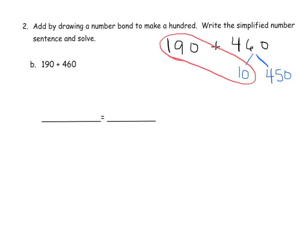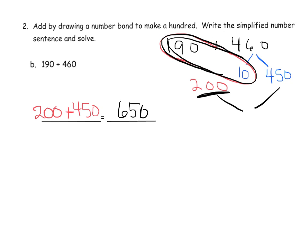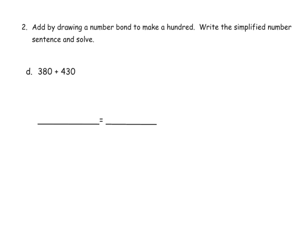I can see that I can add 190 plus 10. And that gives me 200. So now our new simplified number sentence can be 200 plus 450. And then when we add those together, we get 650. Now, ideally, over here, students might even be able to see that. They might see that, oh, well, if these guys together add up to 200, I still have the 450. So 200 plus 450 gives me 650. But right now, we want students to write down the simplified number sentence over here.